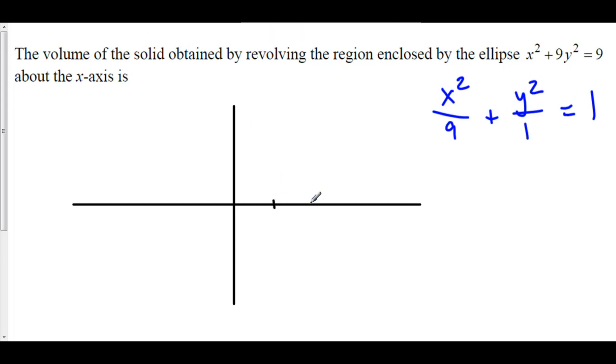The distance from the center to the major vertex is 3. So here we have 1, 2, 3 to the right and 1, 2, 3 to the left. The distance from the center to the minor vertex is 1. Here is the outline of our ellipse.